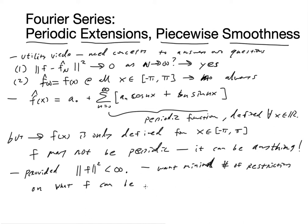We want to have a minimal number of restrictions on what f can be. And that's, of course, the goal. We want to represent as many functions as possible with Fourier series.